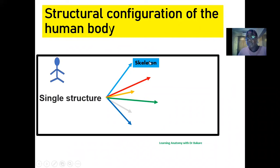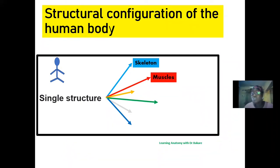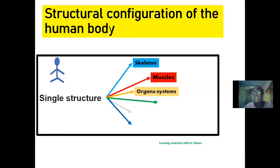Within the skeletal system, we have ligaments that help to join bones together. Ligaments are part of the structural component of the skeletal system, joining one bone to another. This is followed by the muscles, which overlie the bones and cover them up. We also have associated tendons that help in this connection.